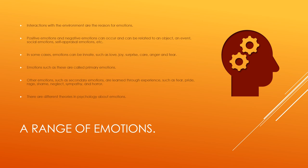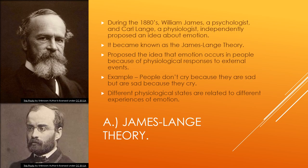There are different theories in psychology about emotions. The first is the James-Lange Theory. During the 1880s, William James — pictured on top — a psychologist, and Carl Lange — pictured on the bottom — a physiologist, independently proposed an idea about emotion. They each came up with this idea separately, and it was combined into what became known as the James-Lange Theory.